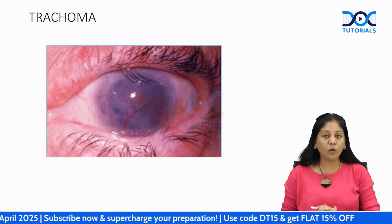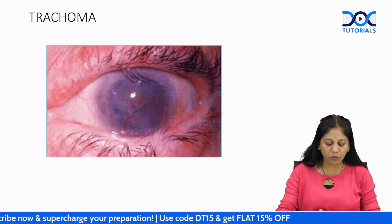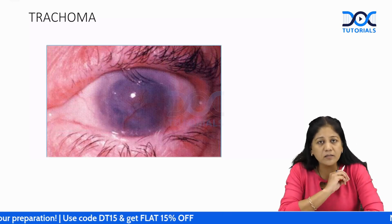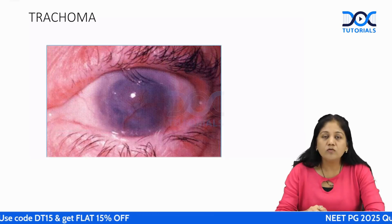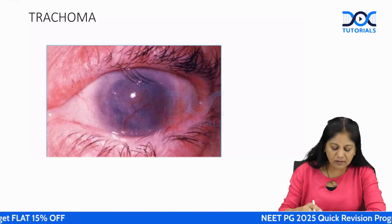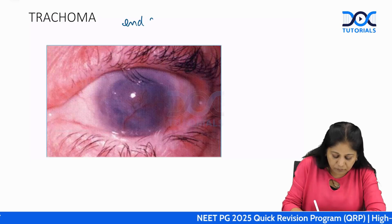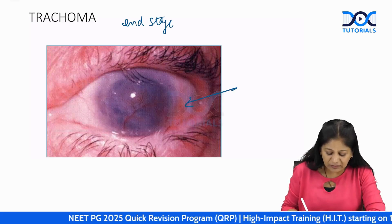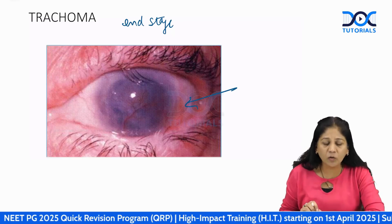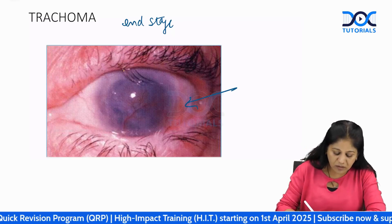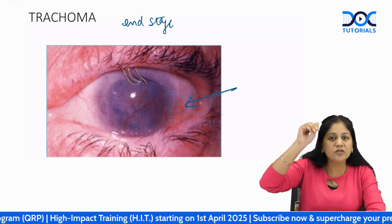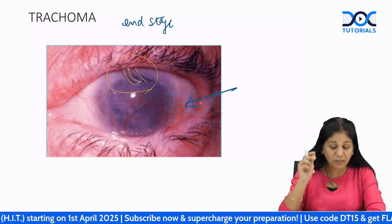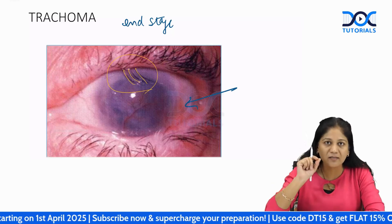The most important pathology here is trachoma, one of the causes of blindness worldwide. In end-stage trachoma, the cornea has an opacity, there is loss of shine of the conjunctiva, and the lashes have changed position — they now point towards the cornea. This is the famous trichiasis eyelash.